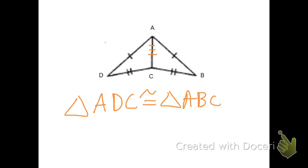When you name two congruent triangles, you want to make sure that all corresponding sides and angles are listed in matching order. Notice how I wrote AD first and AB second — both have one tick mark. I said DC and BC last, and they are both congruent to each other. And I said A first and C last in both, and AC is congruent. So by Side-Side-Side, if three sides of one triangle are congruent to three sides of another triangle, then everything about those triangles is congruent — including the angles.